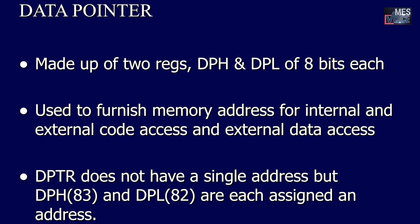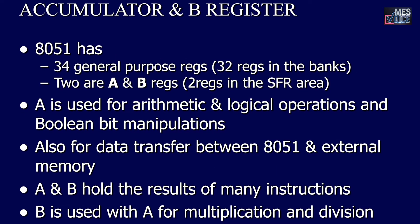The data pointer is made up of two registers, DPH and DPL, of 8 bits each. It is used to furnish memory addresses for internal and external code access and external data access. The data pointer does not have a single address — data pointer high has address 83H and data pointer low has address 82H.